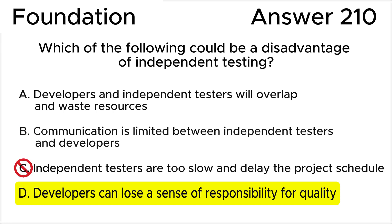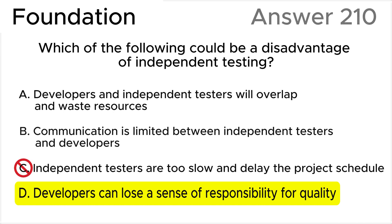Answer C is invalid. While delays in testing can occur, they are not necessarily caused by independent testing alone. Delays can result from various factors such as inadequate resources, unclear requirements, or ineffective test planning. Independent testers, if properly equipped and managed, should not inherently cause delays.